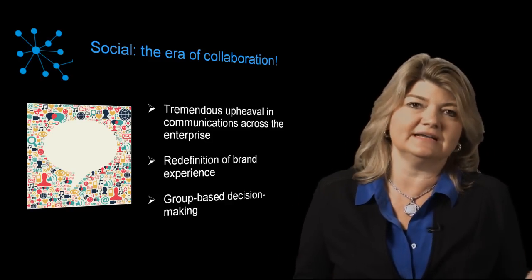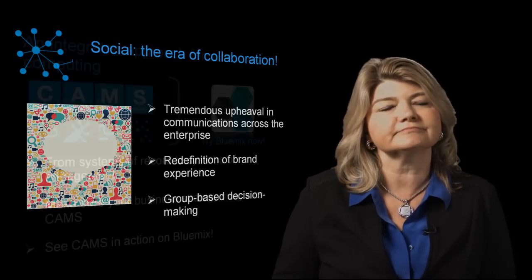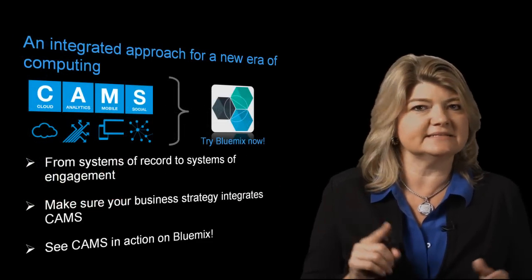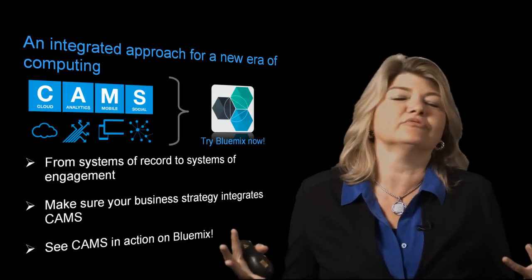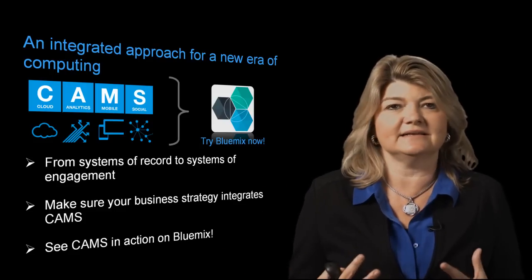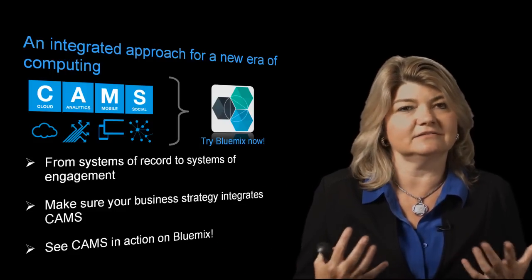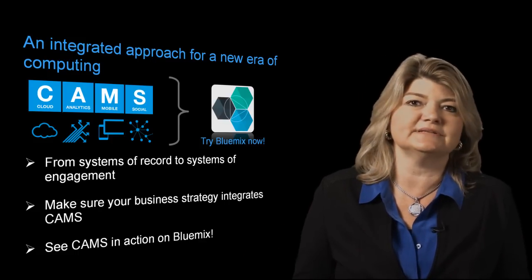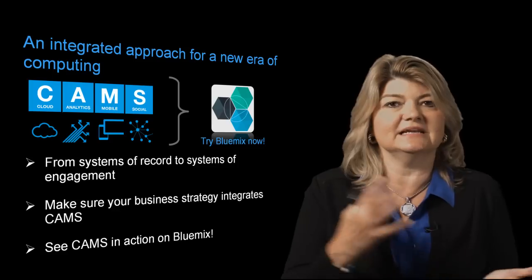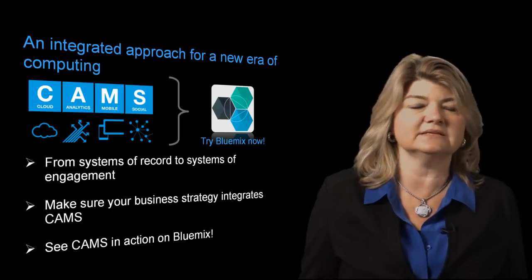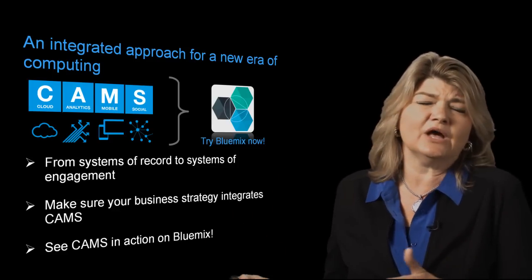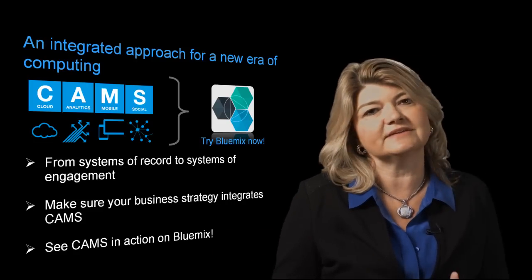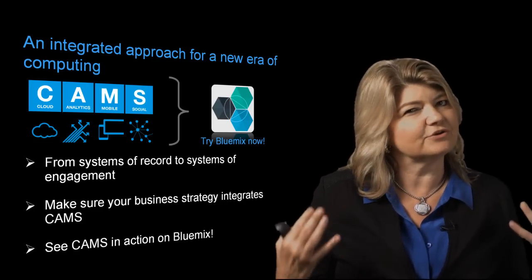Social is reshaping the nature of IT and business. If you think about it, CAMS — Cloud, Analytics, Mobile, and Social — this integrated approach really buys a company a lot. There's more value in using them together. For instance, 68% of social networking is done on a mobile device, so how can you separate the two? These technologies can really help you move from being a system of record all the way to systems of engagement.